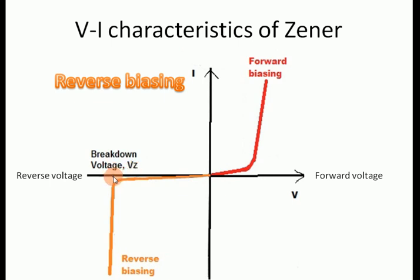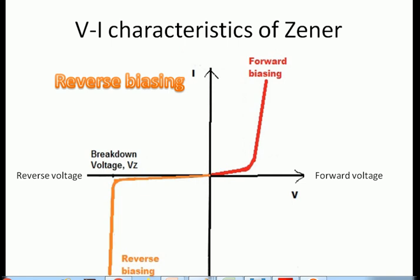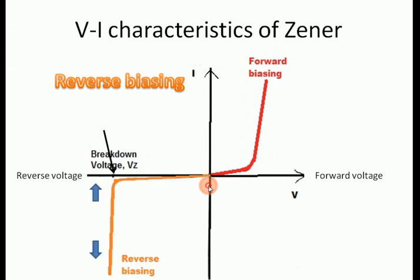At the breakdown voltage point, the voltage becomes independent of the current — the current will increase but the voltage will not increase. This property of the Zener diode is used for voltage regulation purposes. The value of Zener voltage Vz can be precisely controlled by controlling the doping levels. This region is known as the operating region or Zener region.